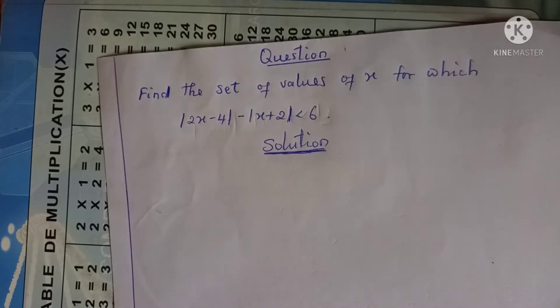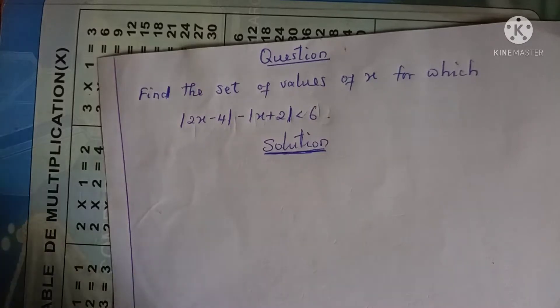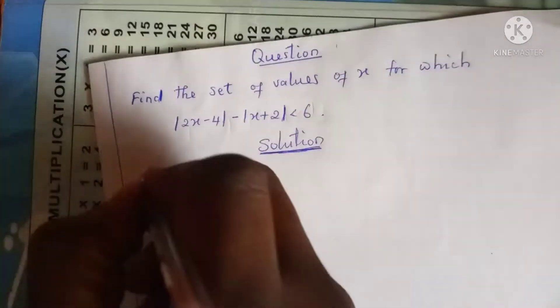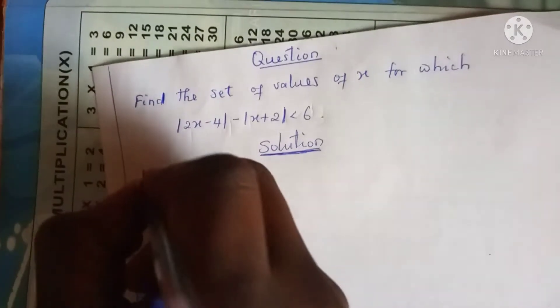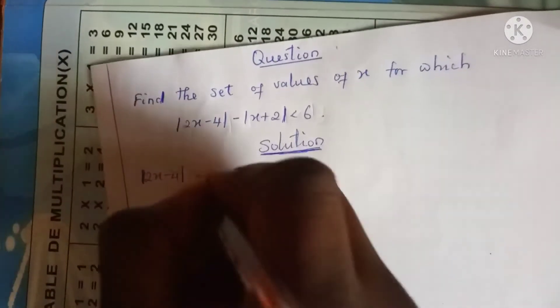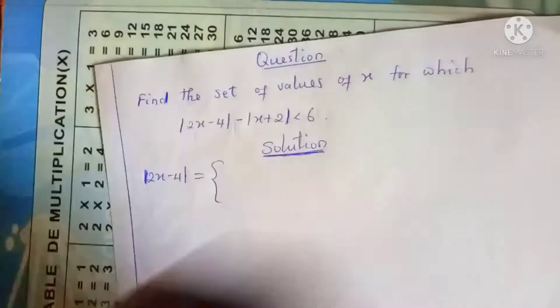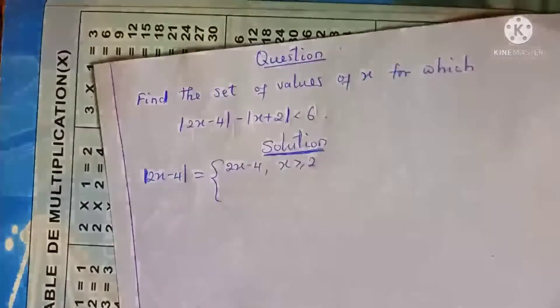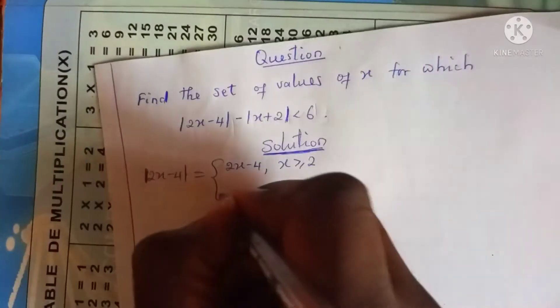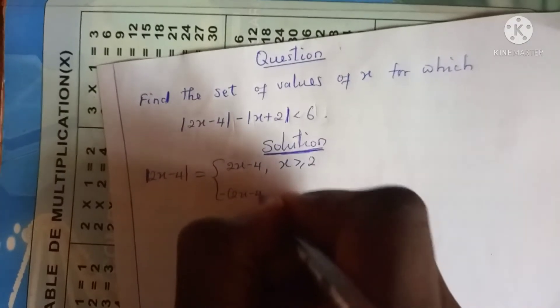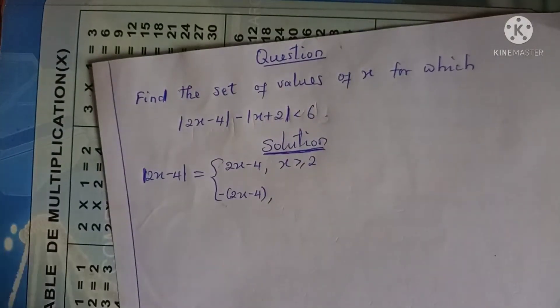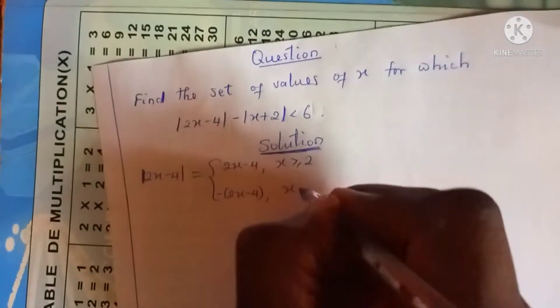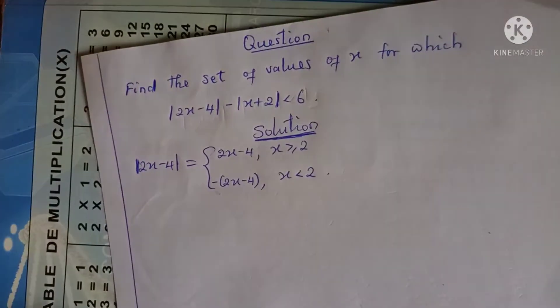I will start by defining the absolute value of 2x minus 4. We know that the absolute value of 2x minus 4 is equal to just 2x minus 4 if 2x minus 4 is greater than or equal to 0, or if x is greater than or equal to 2; or negative of (2x minus 4) if 2x minus 4 is less than 0, or if x is less than 2.